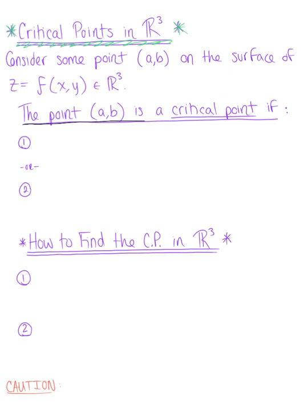We say that this ordered pair (a, b) is a critical point if one of two things occurs. Case one: the point is a critical point if the partial derivative of the surface with respect to x at this point (a, b) is equal to zero, and the partial derivative with respect to y at this ordered pair (a, b) is also equal to zero.